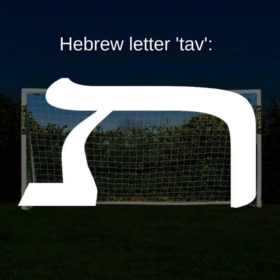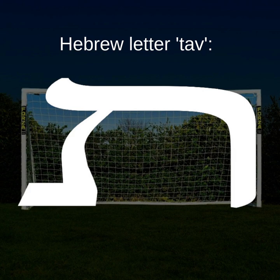Furthermore, the Hebrew letter Tav — you know, you have heard of Alpha and Omega, but in Hebrew it's Aleph and Tav, the beginning and the end, where the beginning meets the end. Where the ball enters, it receives the success. It is the sublime. And in ancient Hebrew the Tav symbol was a crucifix, so you can see the obvious crucifix connection also.